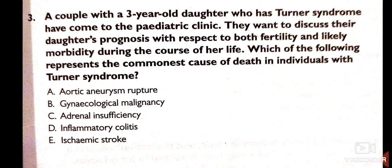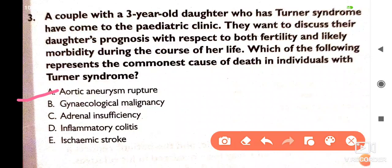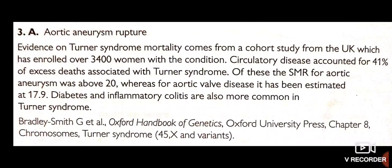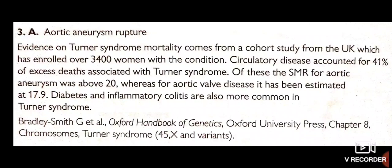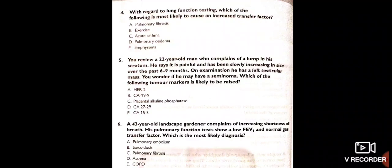A couple with a three-year-old daughter who has Turner syndrome have come to the pediatric clinic to discuss their daughter's prognosis with respect to fertility and likely morbidity. The commonest cause of death in individuals with Turner syndrome is aortic aneurysm rupture. Evidence from a UK cohort study of over 3,400 women shows circulatory disease accounted for 41% of excess deaths. The SMR for aortic aneurysm was above 20, and for aortic wall disease it was estimated at 17.9. Diabetes and inflammatory colitis are also more common in Turner syndrome.